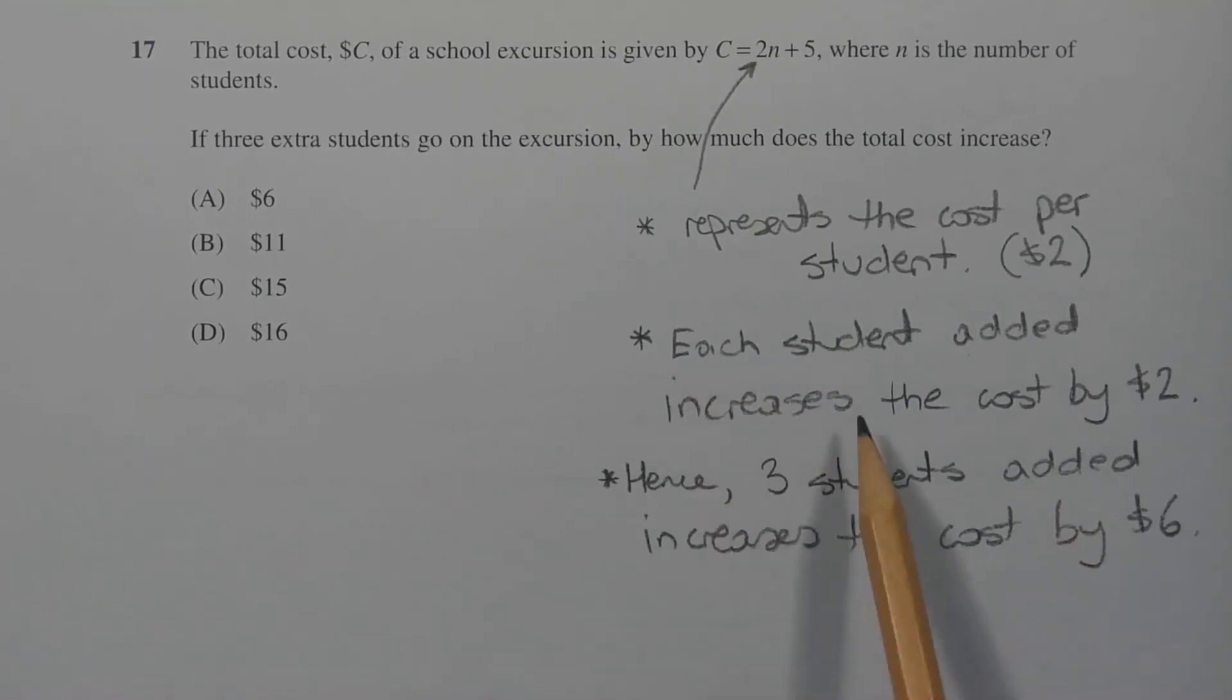So if each student added increases the cost by $2, adding 3 students would increase it by 3 times $2, which is $6. Therefore the answer is option A.